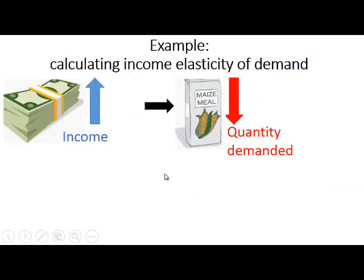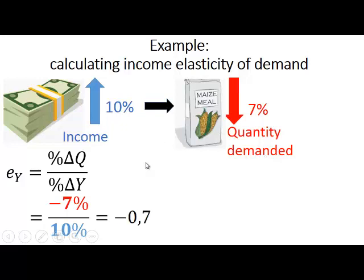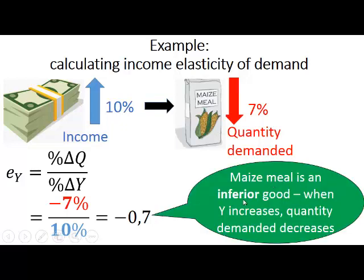Now we look at maize meal. When the income of consumers increases by 10%, the quantity demanded of maize meal decreases by 7%. If we calculate the income elasticity of demand, it is minus 7% divided by 10%, which gives us minus 0.7. This tells us that maize meal is an inferior good — when income increases, the quantity demanded of an inferior good decreases. This means consumers bought this product because they could not afford to buy other products, but now that income has increased, they can afford to buy more luxurious products.